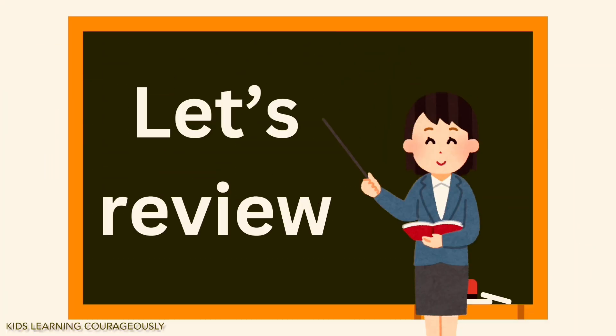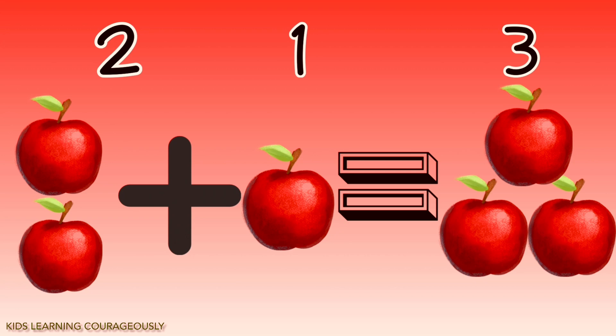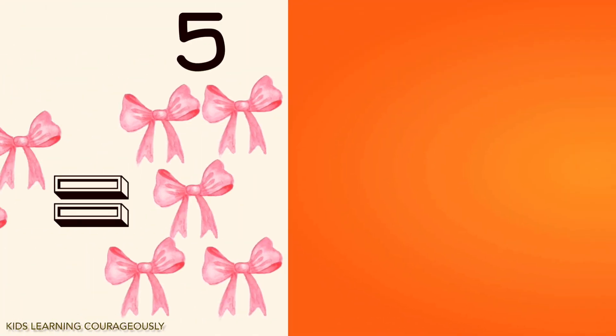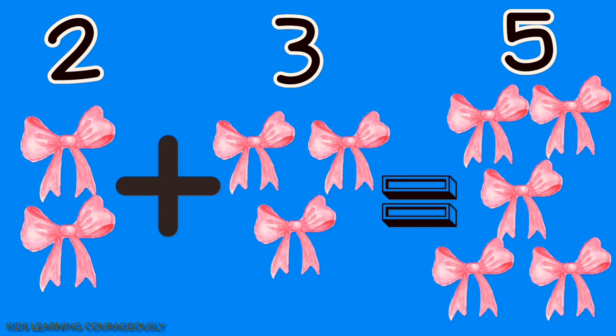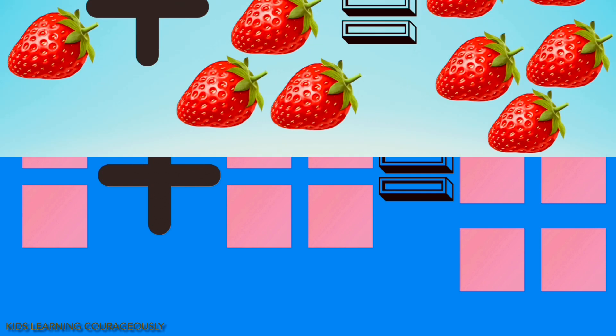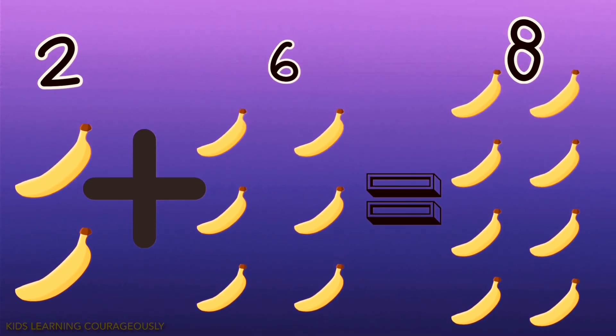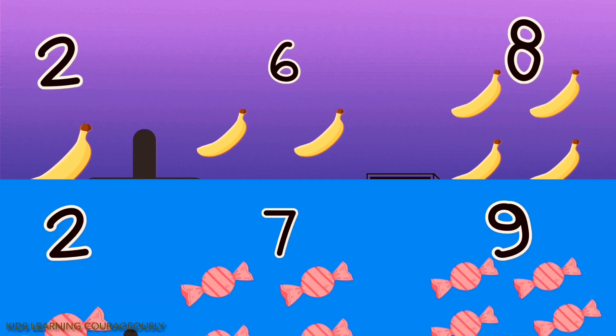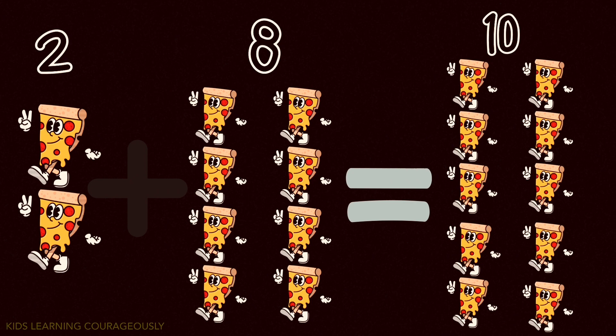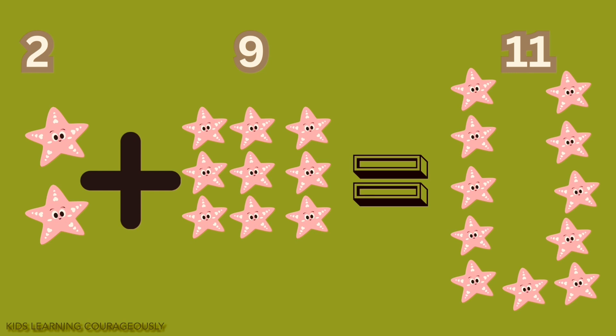Let's review! Two plus four equals six. Two plus five equals seven. Two plus six equals eight. Two plus seven equals nine. Two plus eight equals ten. Two plus nine equals eleven.